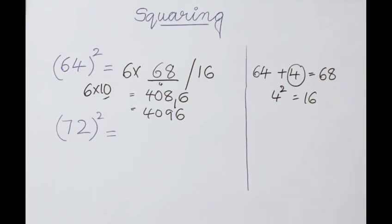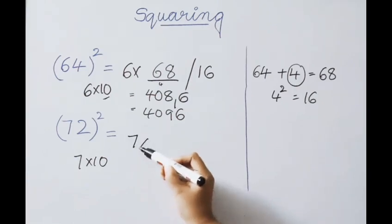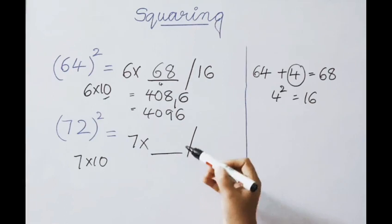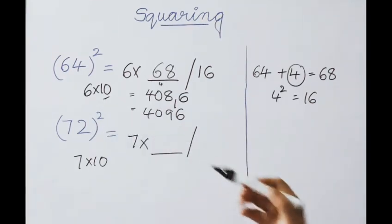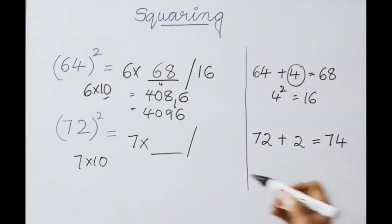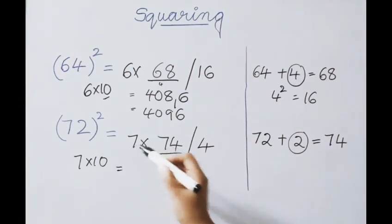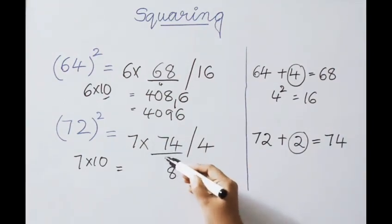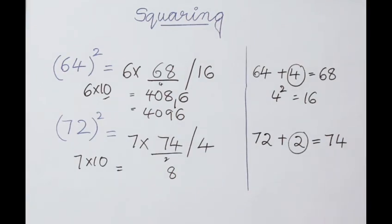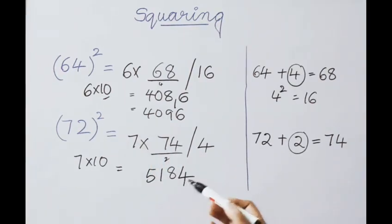Next example: 72 squared. 72 means 7 times 10, so we multiply the first part by 7. Above 70, the excess value is 2. For the given number 72, add 2: we get 74 as the first part answer. 2 squared is 4 — write down 4. Now multiply 74 by 7: 7 fours are 28, write 8 carry 2; 7 sevens are 49 plus 2 is 51. Write down second part 4. So 72 squared is 5184.